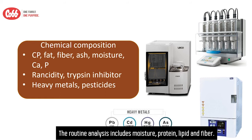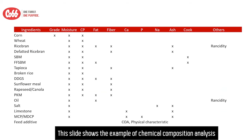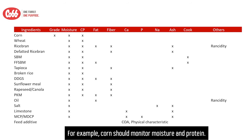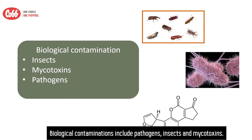Chemical composition: the routine analysis includes moisture, proteins, lipids, and fibers. Some parameters such as heavy metals can be periodically evaluated. This slide shows an example of chemical composition analysis for various ingredients. Different ingredients have different analysis programs. For example, corn should monitor moisture and proteins, whereas rice bran should monitor moisture, protein, fat, ash, and fibers.